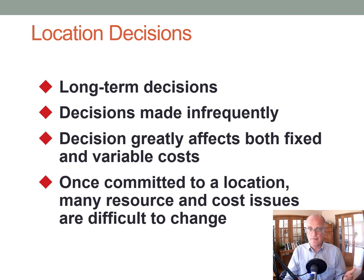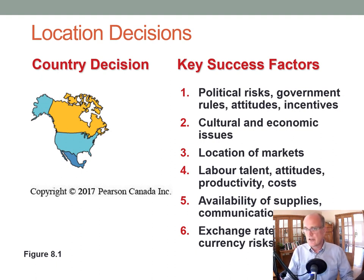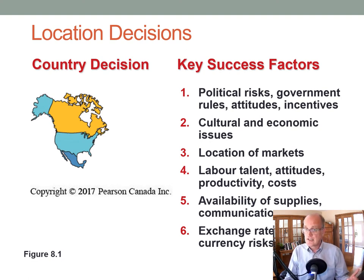Location decisions are long-term and made infrequently. They greatly affect both fixed and variable costs, and once committed, they're hard to change. At the macro level — country decisions — we consider political risks, government rules, attitudes, corruption, and incentives. Governments often give tax incentives to attract businesses, and corruption and risk are important considerations.